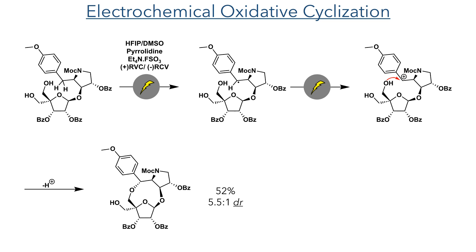This was done using an electrochemical oxidative cyclisation. Due to its proximity to the aromatic ring, the benzylic position is susceptible to oxidation, and the group found that this was most effectively done using electrochemical methods. The precise details of this mechanism aren't known, but it is thought that it first goes through the abstraction of a hydrogen radical, and then further oxidation to form a cation. This can then undergo an intramolecular attack from one of the primary hydroxyl groups, forming the desired ether. This formed the desired macrocycle in a 52% yield in two cycles, with a 5.5:1 DR and 11% of recovered starting material. The preference for this diastereomer is guided by the stereochemistry at the anomeric position, which promotes the attack of the hydroxyl group on the same face of the ring.